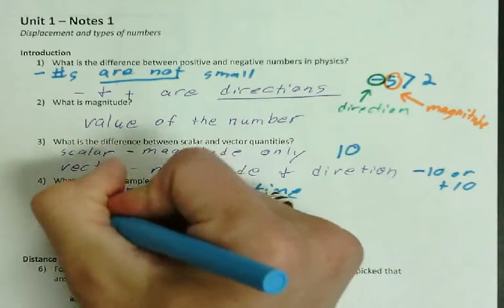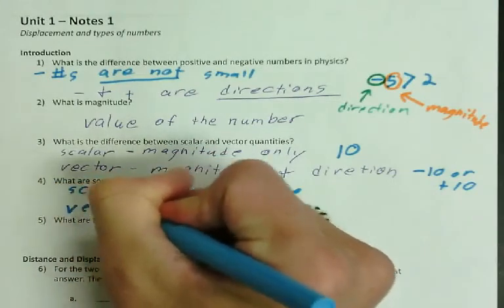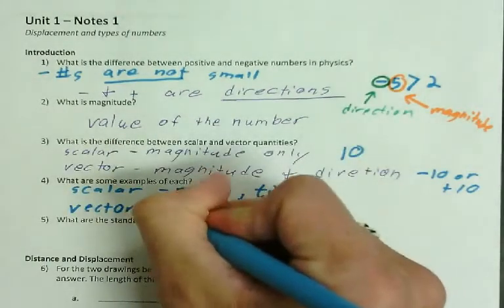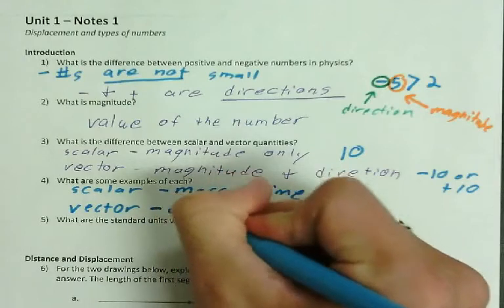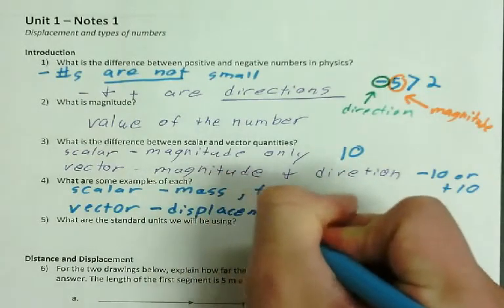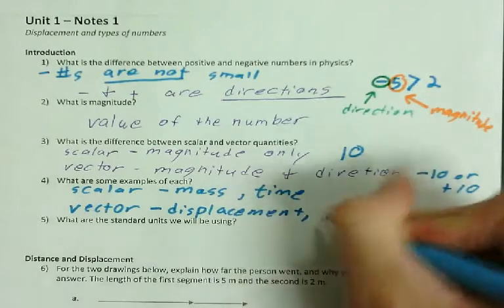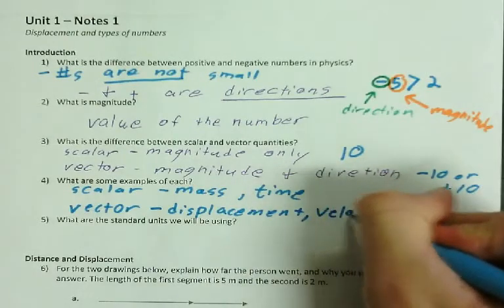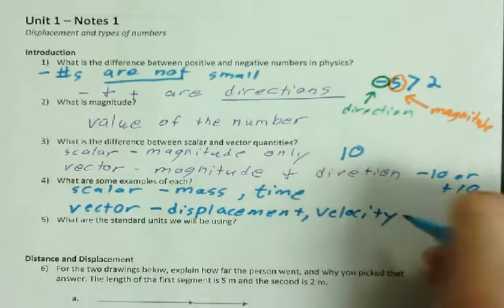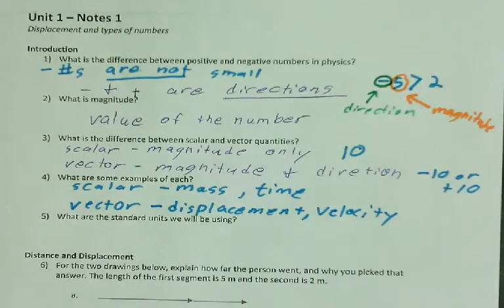Vectors, on the other hand, do have direction. So one of the things we're going to talk about today is called displacement. That has a direction. Another one we're going to talk about is velocity. So these are things that have to have a direction.